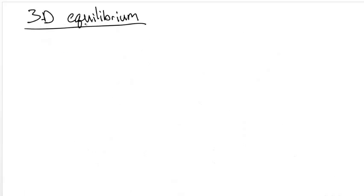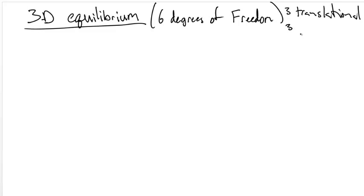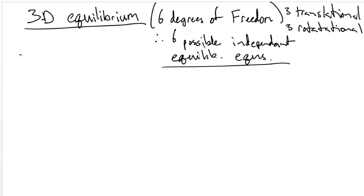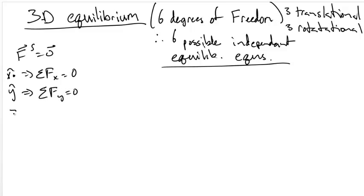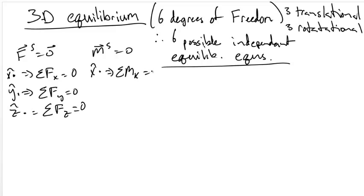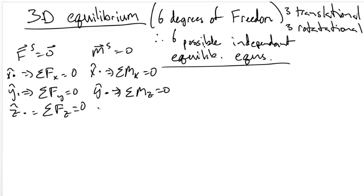For example, you could choose three moment equations and zero force equations, or two moment equations and one force equation. For three-dimensional equilibrium there are six degrees of freedom — three translational and three rotational — therefore we have six possible independent equilibrium equations. The common equations used are: sum of forces in X equals zero, sum of forces in Y equals zero, sum of forces in Z equals zero, and sum of moments in X, Y, and Z each equal to zero. Given this, it is possible to solve for six unknowns in three dimensions.